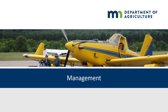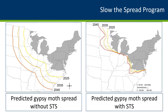Now let's discuss some management ways to control Gypsy Moth. The Slow the Spread program is a cooperation between federal, state, and local government agencies to help control Gypsy Moth spread across North America. On the left-hand side, the Gypsy Moth's predicted spread without the program is approximately 15 miles each year. On the right-hand side is the spread of Gypsy Moth with this program. As you can see from those colored lines, the spread is significantly reduced with the assistance of this program.